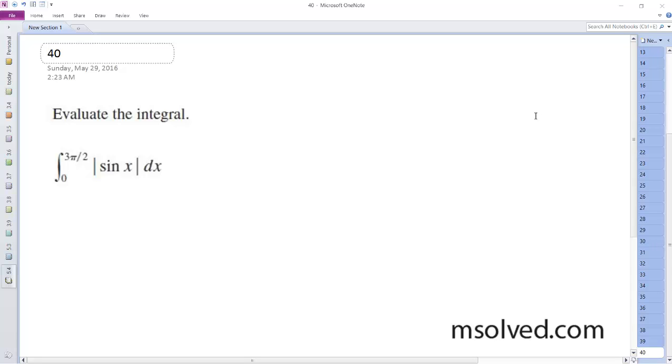Alright, so we're going to evaluate this from 0 to 3 pi over 2. So starting off here, we've got to do this two separate ways.